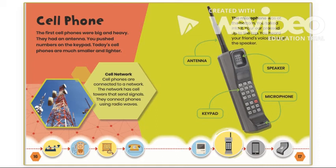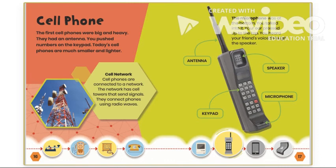Cell phone: The first cell phones were big and heavy. They had an antenna. You push numbers on the keypad. Today's cell phones are much smaller and lighter. Cell phones are connected to a network. The network has cell towers that send signals and connect phones using radio waves. Let's look at the different parts of this early cell phone: the antenna, speaker, microphone, and keypad. The microphone was at the bottom — you talked into it. You pressed your ear up to the top and heard your friend's voice through the speaker.